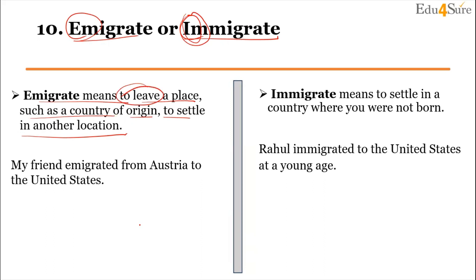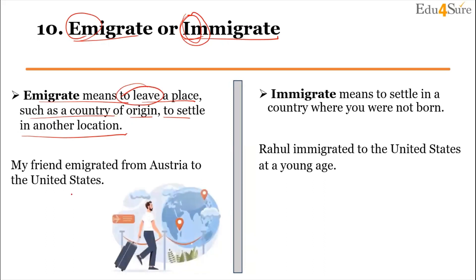For example: 'My friend emigrated from Australia to the United States.' Immigrate means to settle in a country where you were not born. For example: 'Rahul immigrated to the United States at a young age.'